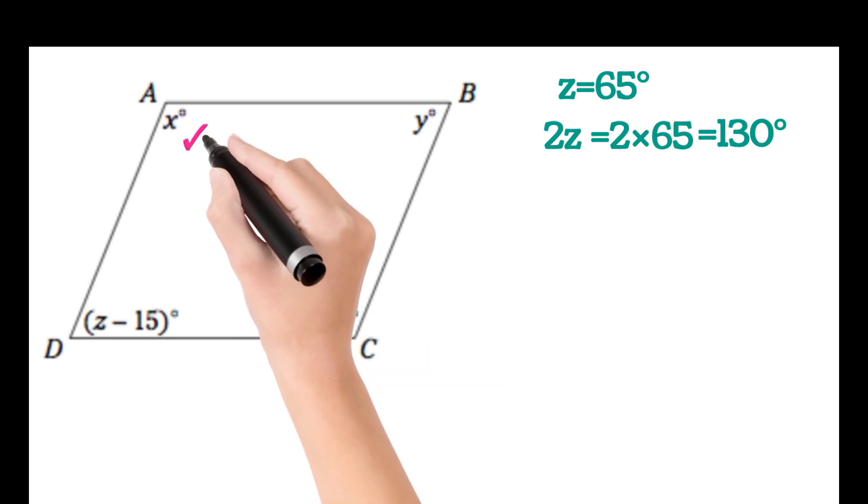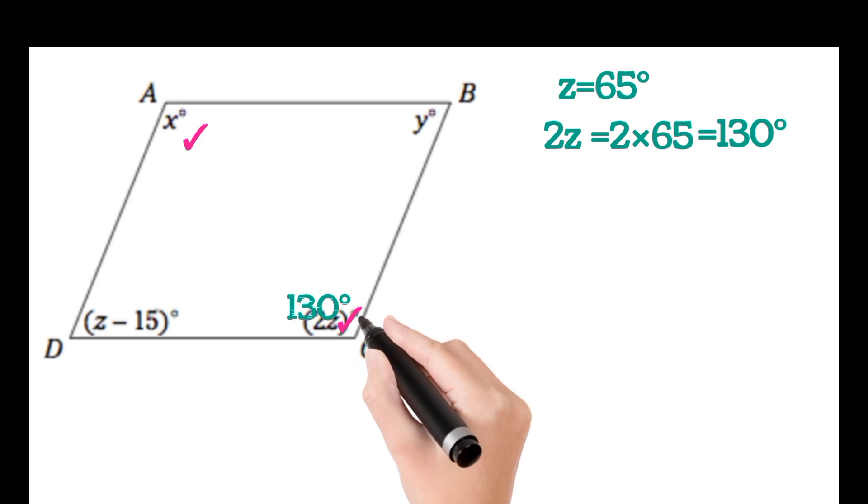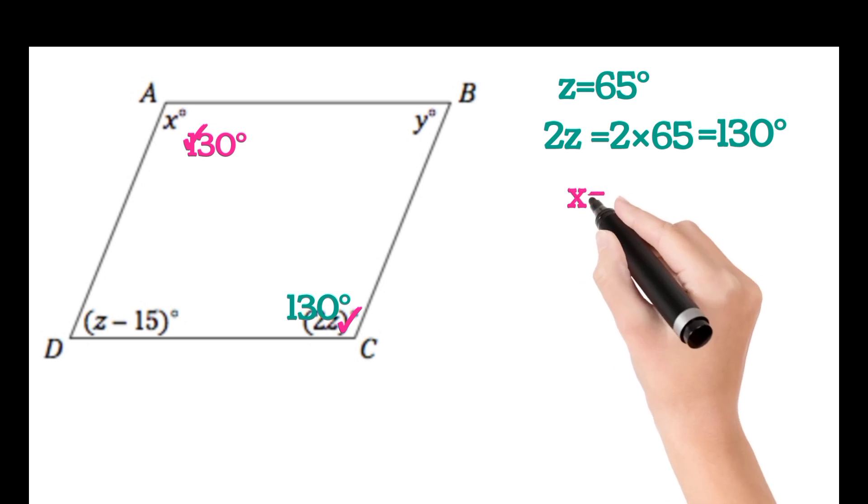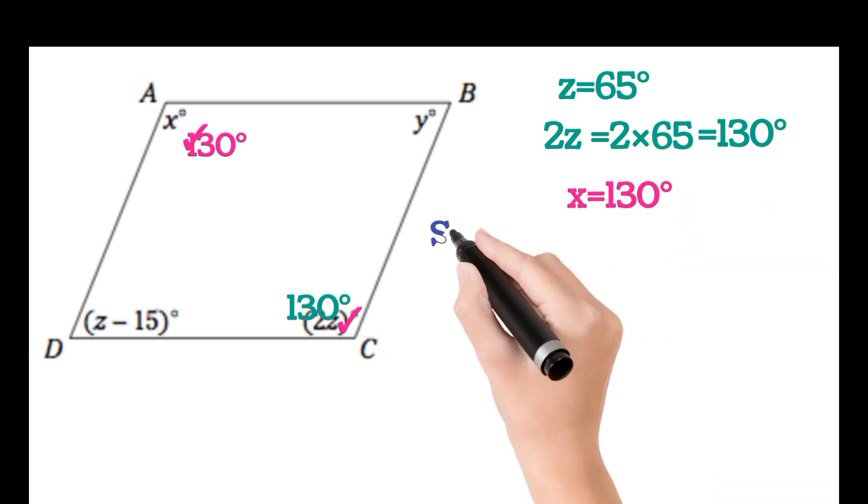This angle is equal to this angle. Opposite angles in the parallelogram are equal, so this angle will also be 130 degrees. So x is 130 degrees.